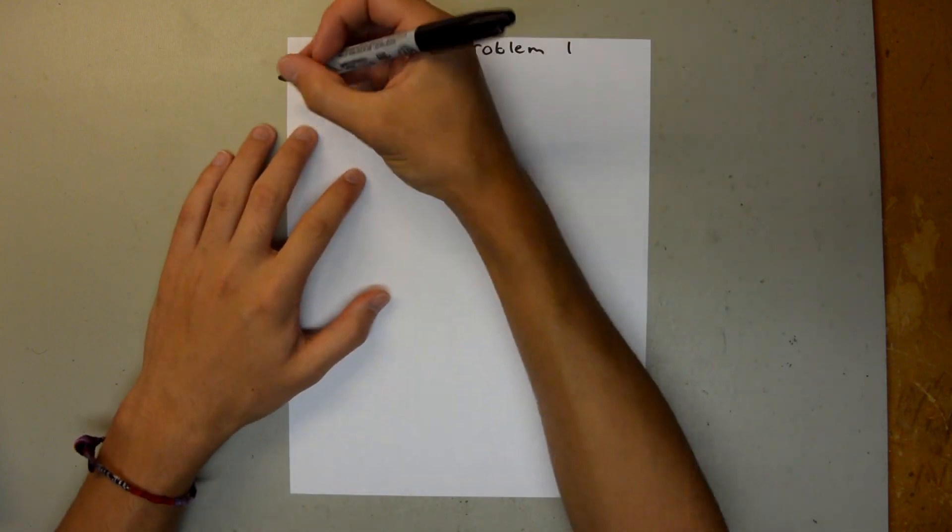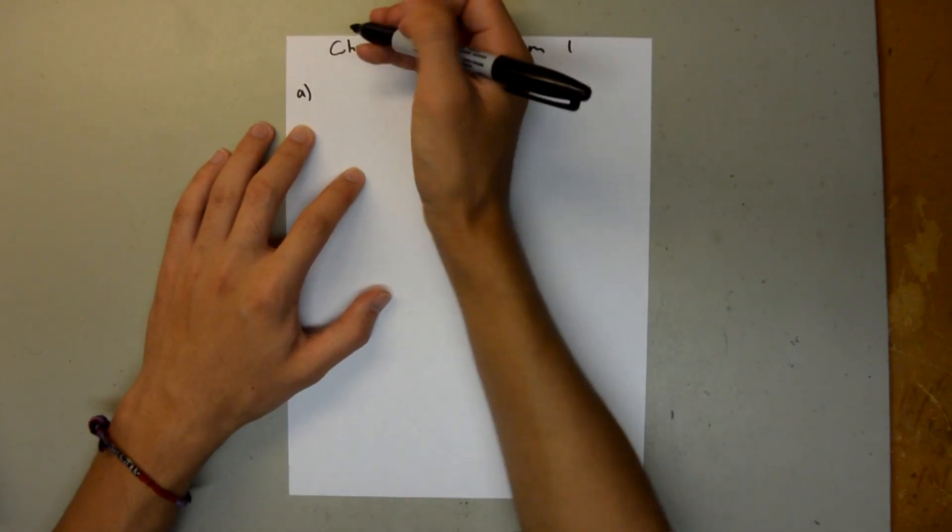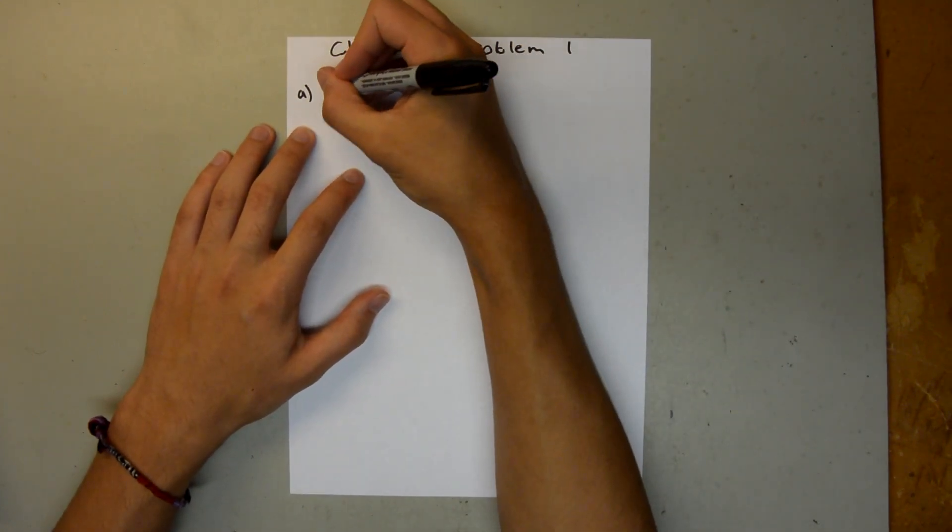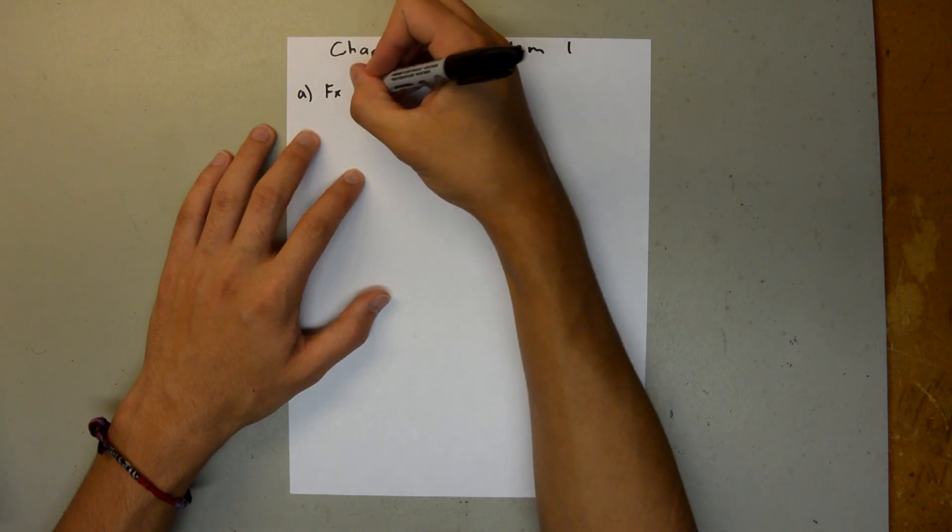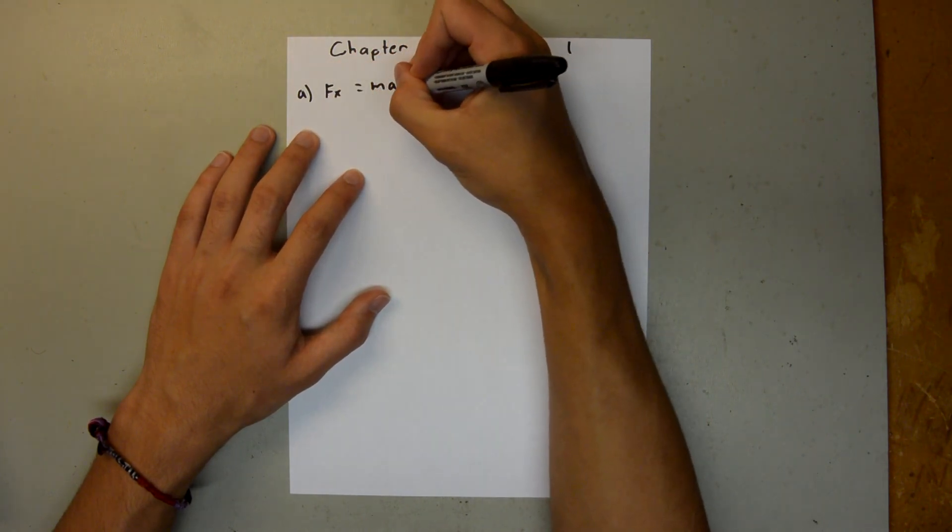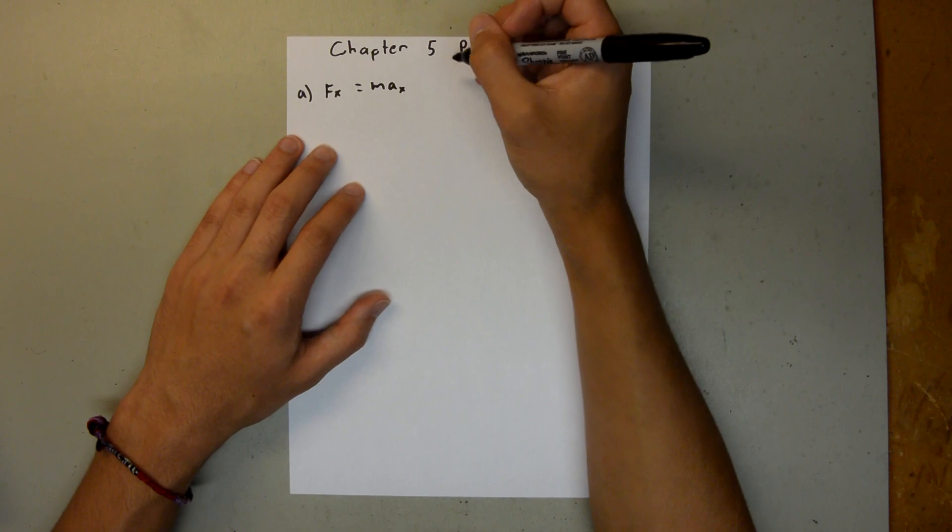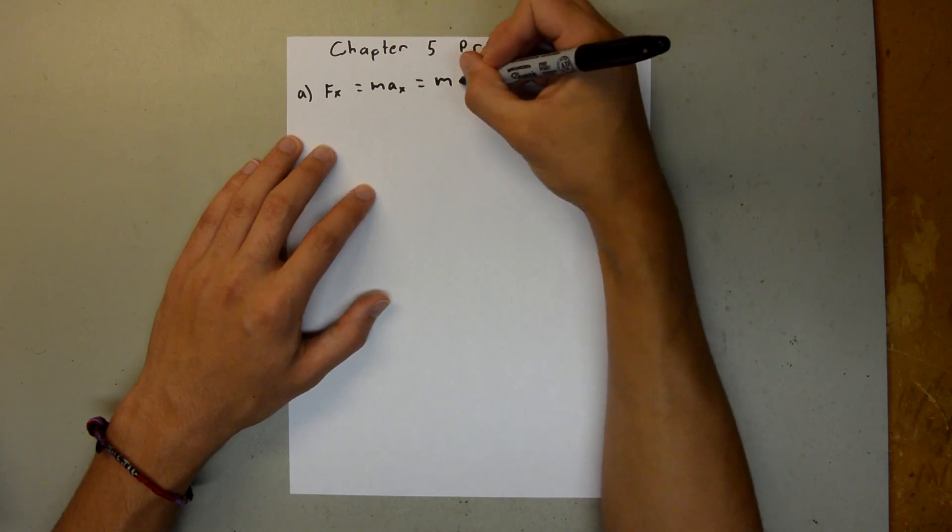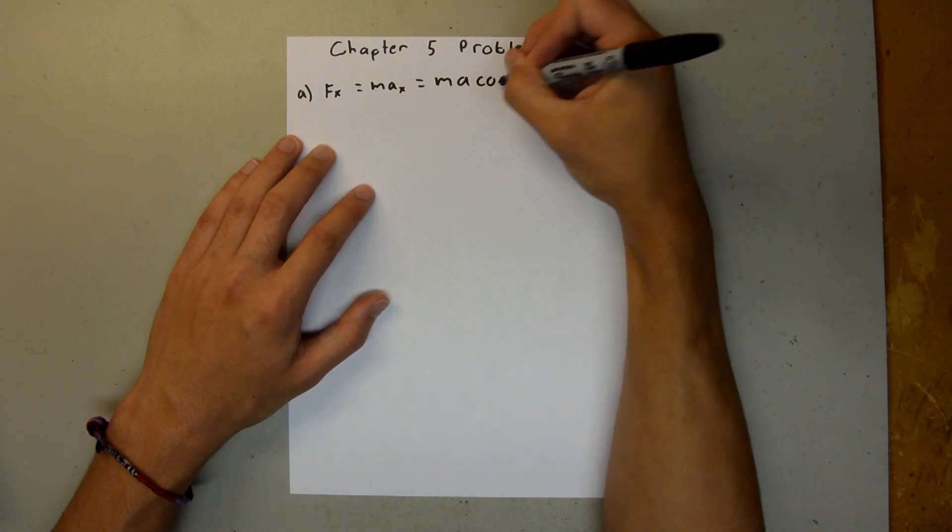So for Part A, we know that the force in the x-direction is equal to mass times the acceleration in the x-direction. This is going to be equal to m times a times cosine theta.